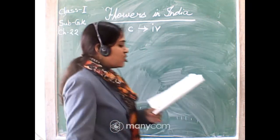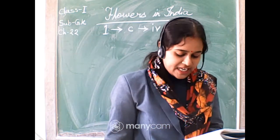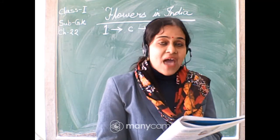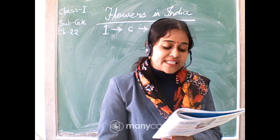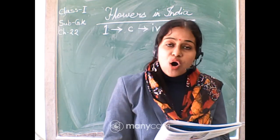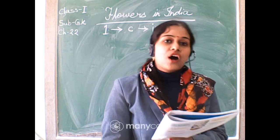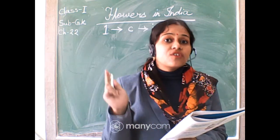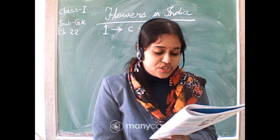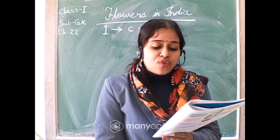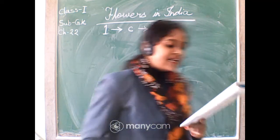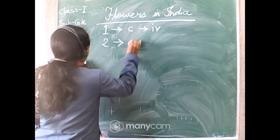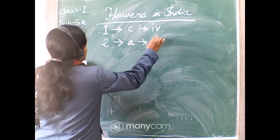Lotus is the national flower of India, it grows in ponds and has floating leaves. Next, number two: Marigold. Marigold is a golden yellow or orange flower — it may be yellow or orange. Picture A is the marigold.